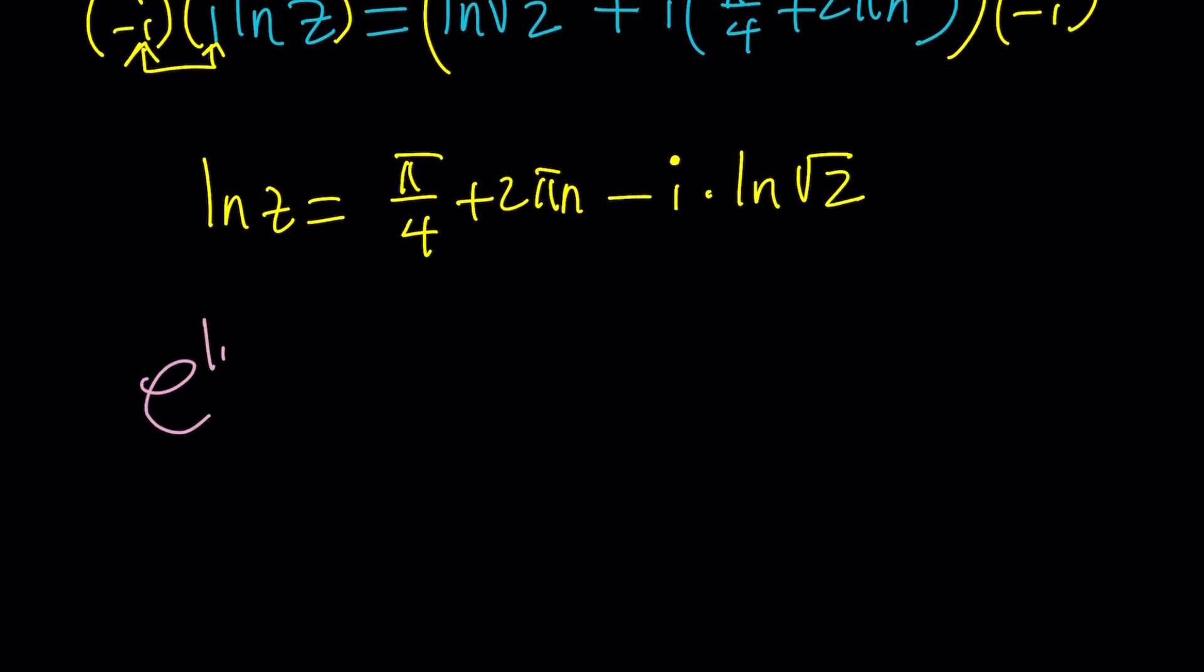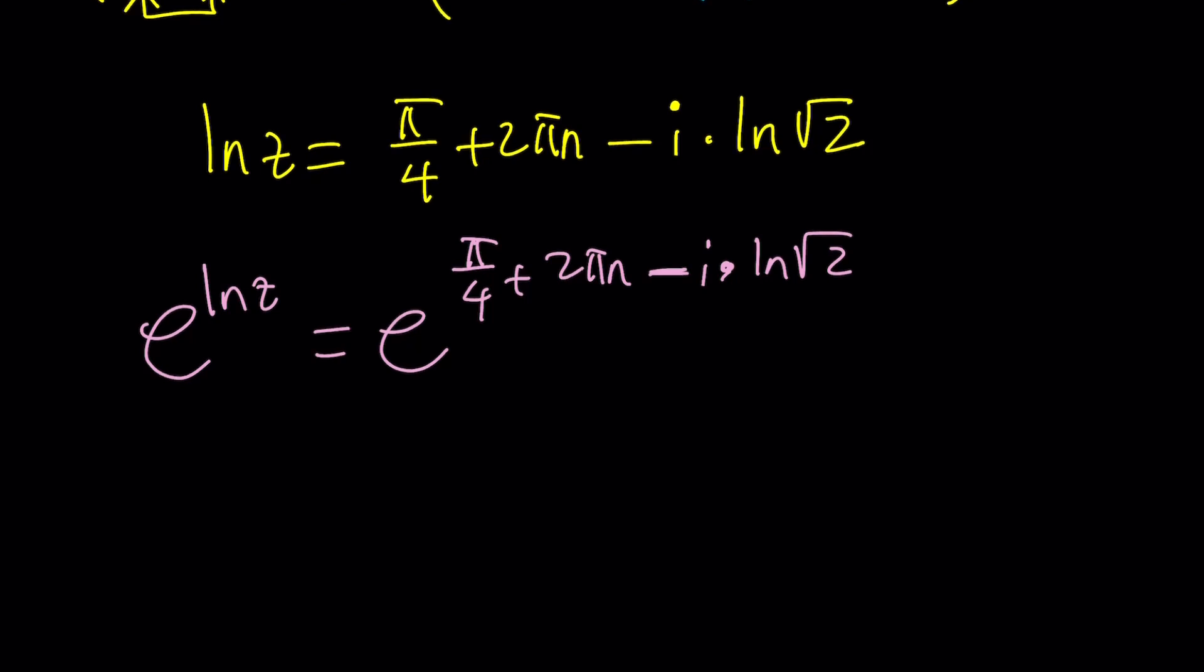You can just e to the power of both sides and that's going to give you the answer. When you do you're going to get e to the ln z equals e to the pi over 4 plus 2 pi n minus i times ln square root of 2. Awesome.